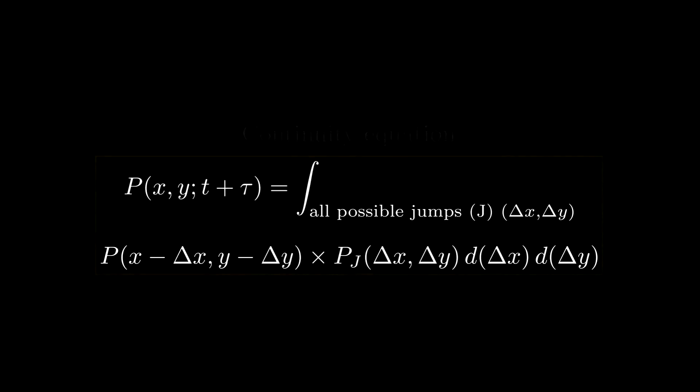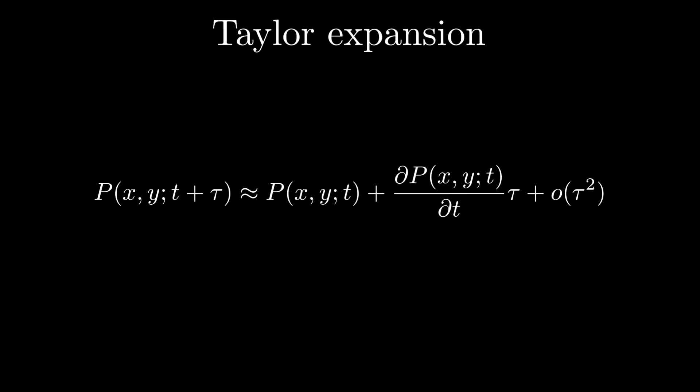Now we can perform a Taylor expansion on both sides, one of them on terms of tau and the other on terms of delta x delta y, the size of the jump.